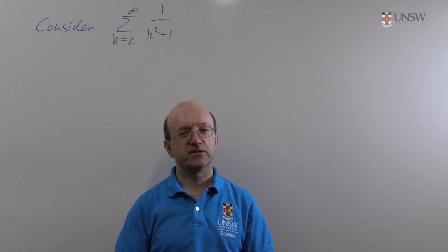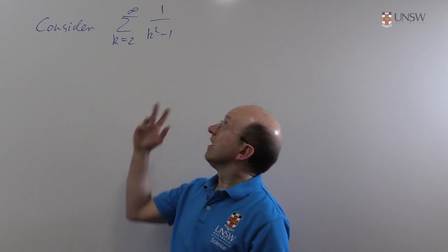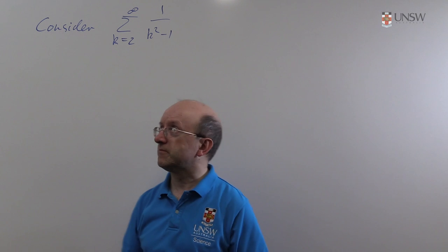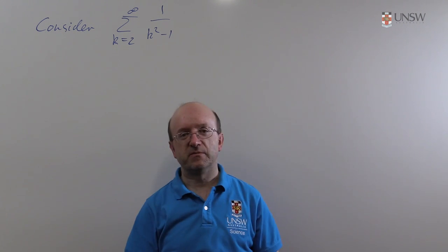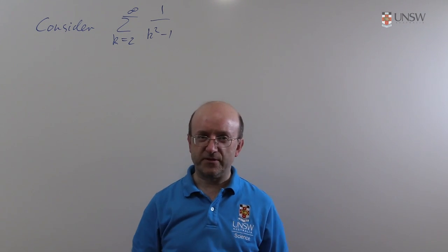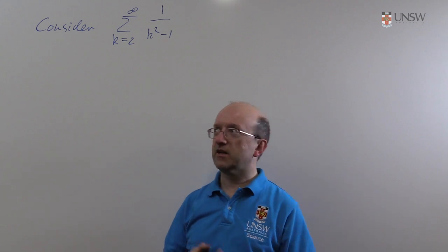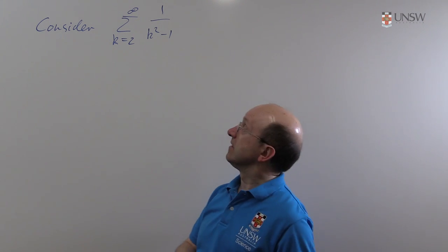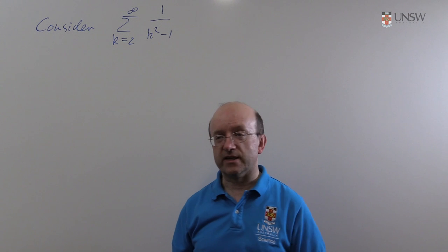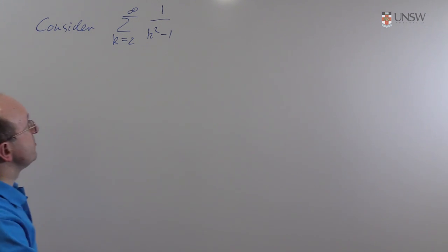OK. In this video we're going to be looking at summing a series. It's another telescoping series. In this case, 1 over k squared minus 1. Perhaps a little less obvious that this is a telescoping series than some of the examples you might have looked at. But the technique is the same. We once again use partial fractions.